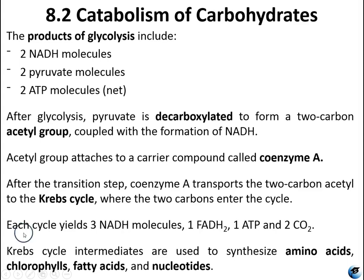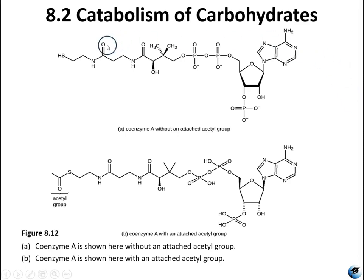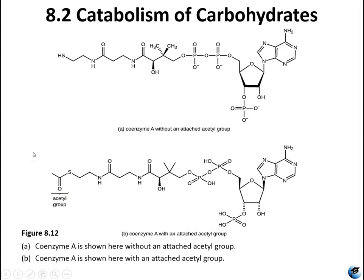Each round of the Krebs cycle yields three NADH, one FADH2, one ATP, and two carbon dioxide molecules. Some intermediate products are routinely used to synthesize amino acids, chlorophylls, fatty acids, and nucleotides. Coenzyme A is shown here before and after the acetyl group attaches via a peptide bond. It's a large molecule, and the acetyl group binds loosely enough for another compound to cleave it off easily — that's why coenzyme A is called a carrier molecule, holding the acetyl group until it's used in the Krebs cycle.